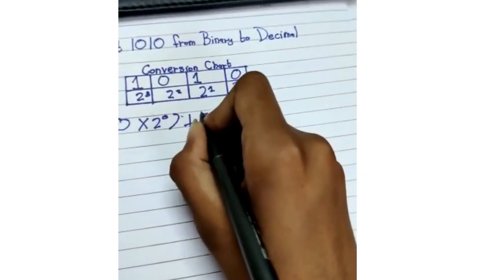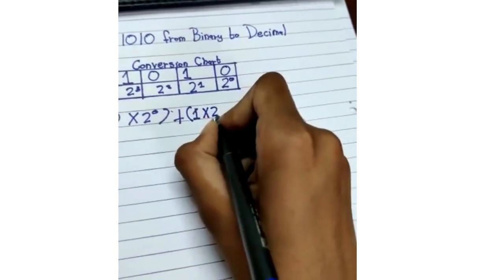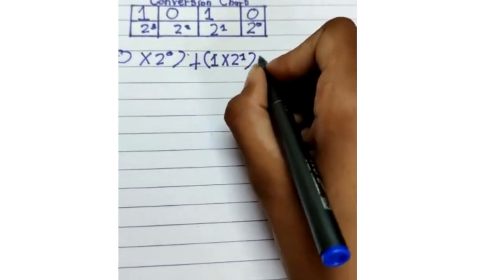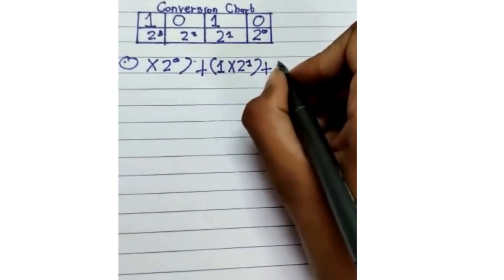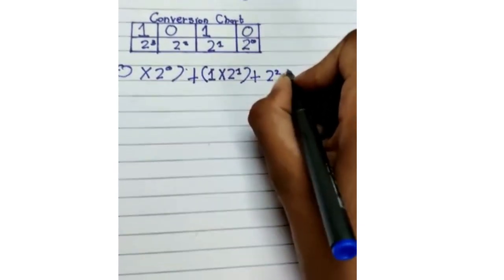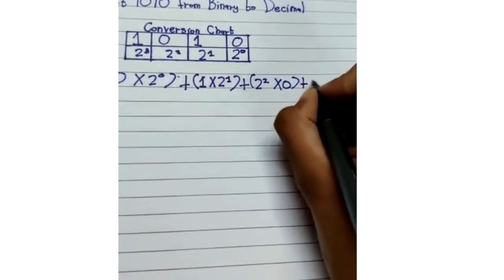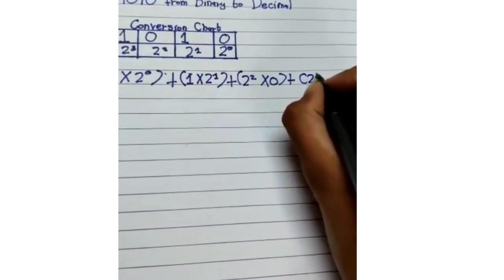One in parenthesis times two bracket one here. Yep, this is a good angle for you to see. And two raised to power of two times zero again here in brackets, and two raised to power of three times one.